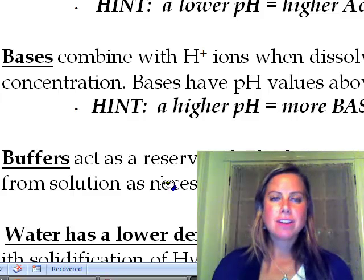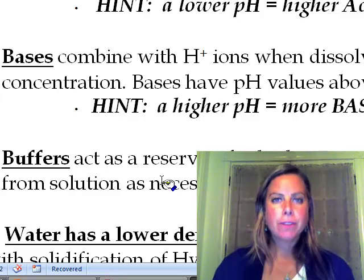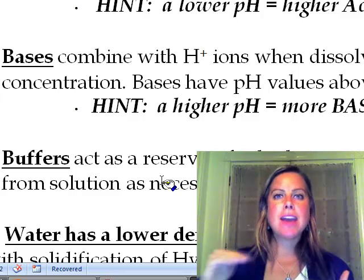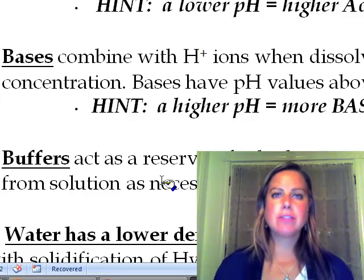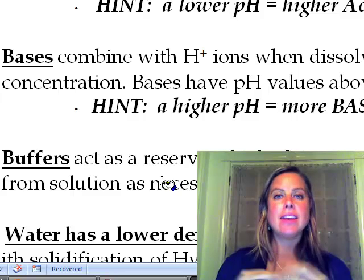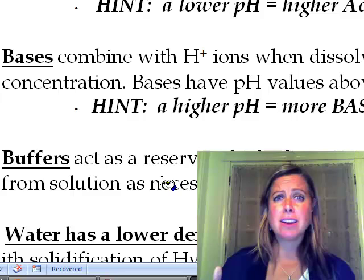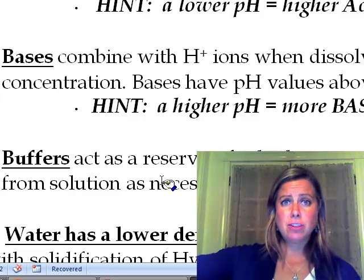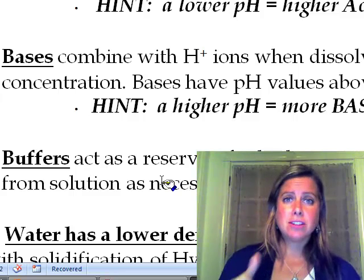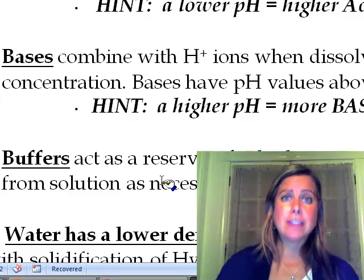One thing that we haven't talked about yet are buffers. Buffers, their job is to keep the pH the same, no matter what it is you're talking about. What's going to happen is, let's say you have something with a pH of 12 that's really basic, and you start adding acid to it. If you add acid to that solution, the pH should start going down.